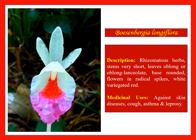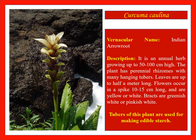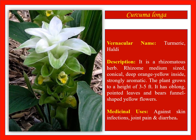Gosinbergia longiflora — it is an indicator of perennial streams or water bodies inside the forest; used against skin infection, cough, asthma, and leprosy. Elettaria angustifolia — against fever and dislocated bone. Elettaria cardamomum collina — tubers of this plant are used for making edible starch. Curcuma longa — against skin infection, joint pain, and diarrhoea.